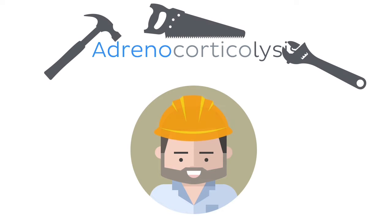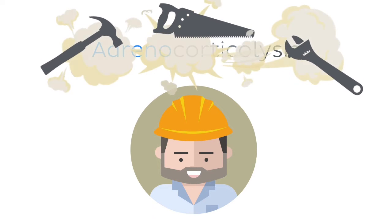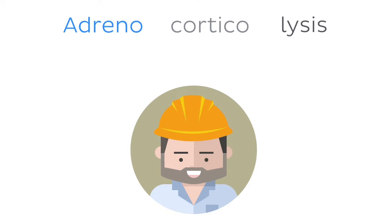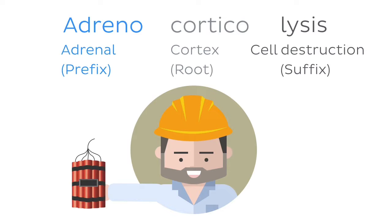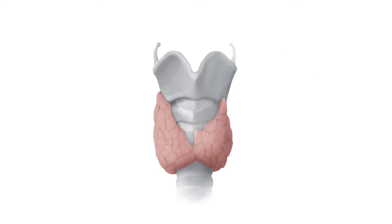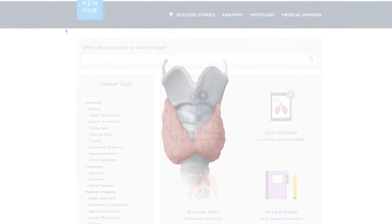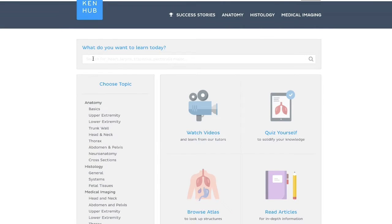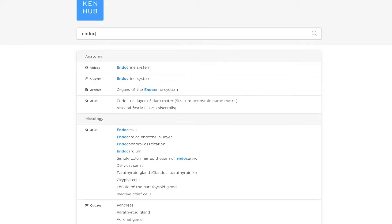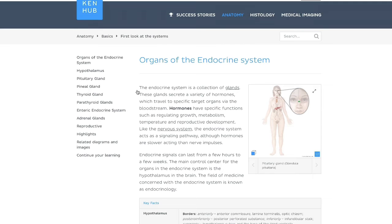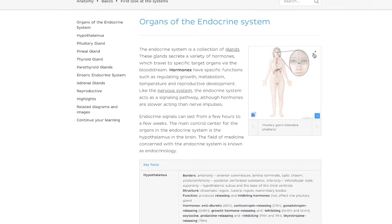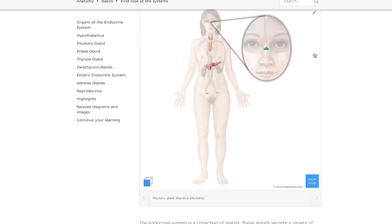We've been showing you how terms are made by breaking every term down into familiar word parts — prefixes, roots, and suffixes. So the next time you see a new, scary looking term, you'll know how to deal with it. We'll be focusing on the terminology of the endocrine system in this video, but if you want to learn more about the anatomy of the organs and structures we'll encounter today, you can head over to KenHub.com, where you'll find hundreds of detailed anatomical articles, as well as beautiful illustrations to help you improve your learning.